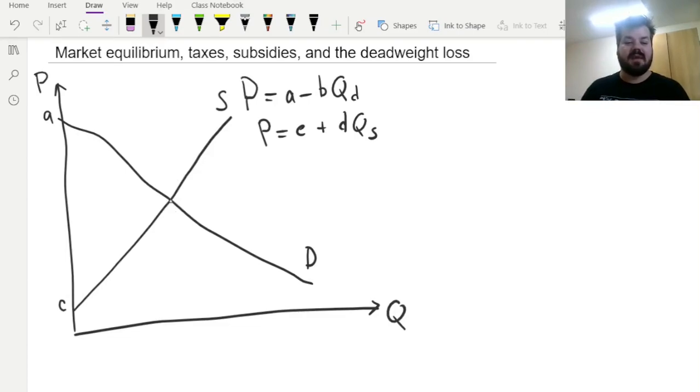Here, where the demand and supply curves intersect, we would have our market equilibrium here in this point, and we can see the equilibrium quantity, quantity equilibrium, and the equilibrium price over here.